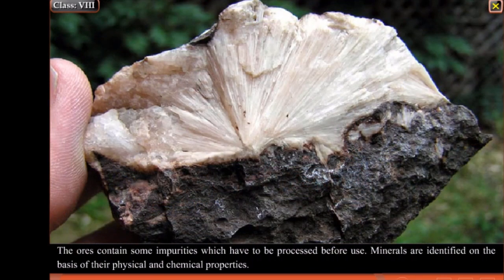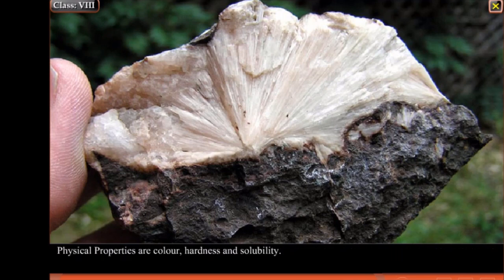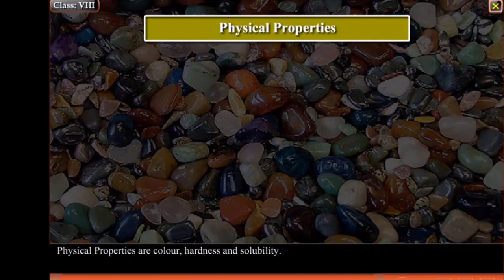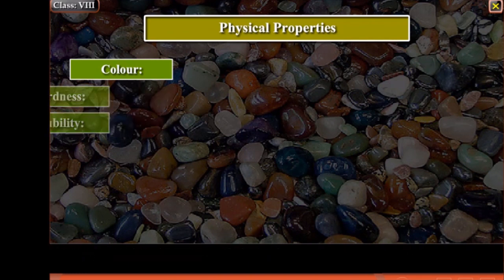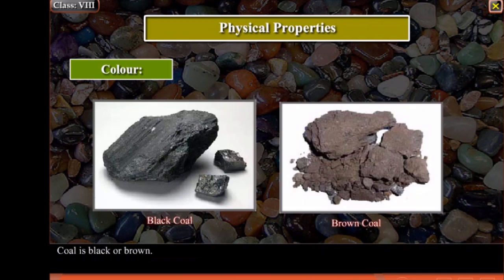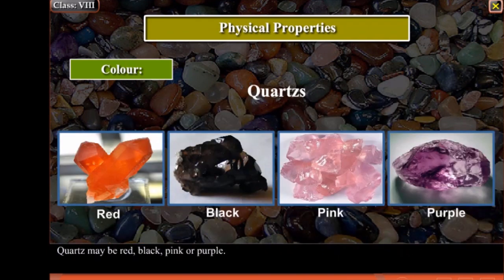Minerals are identified on the basis of their physical and chemical properties. Physical properties are colour, hardness and solubility. Colour: Coal is black or brown. Quartz may be red, black, pink or purple.